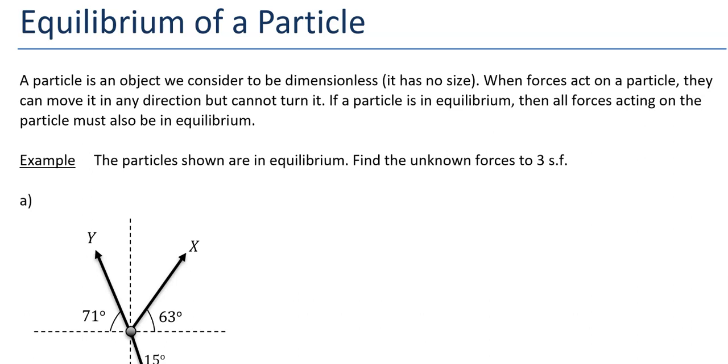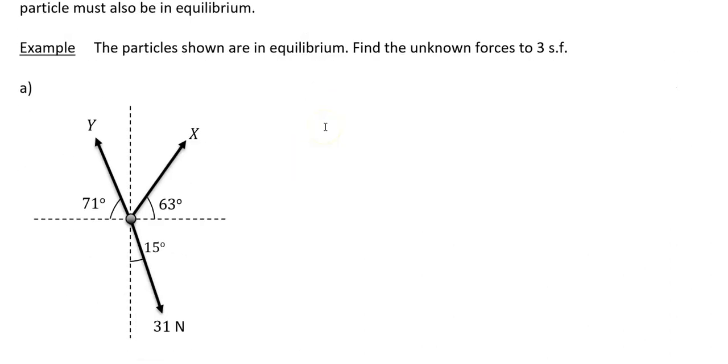So basically if something is in equilibrium, the forces up equals the forces down, the forces left equals the forces right, and forces in any particular plane are going to be zero. The particles shown are in equilibrium in this question, find the unknown forces to 3 sig figs.